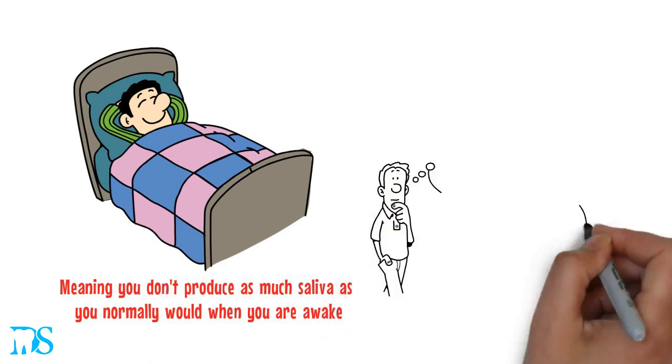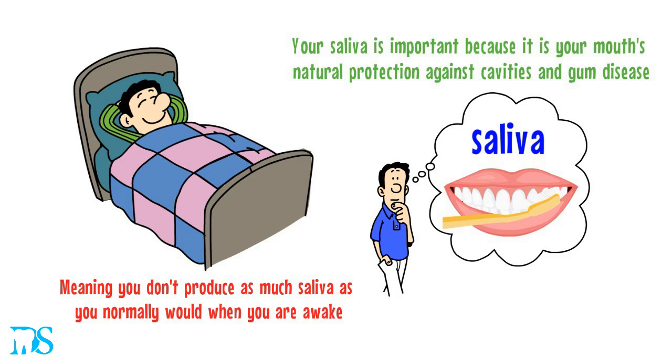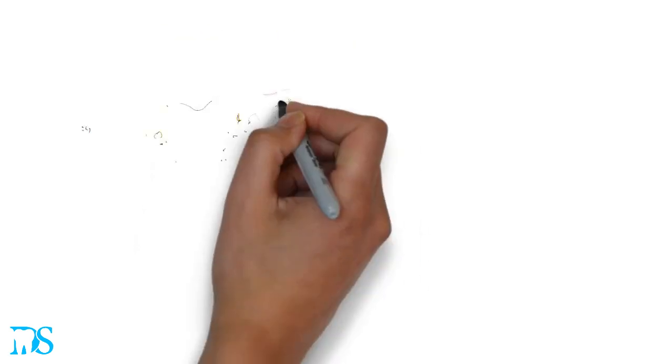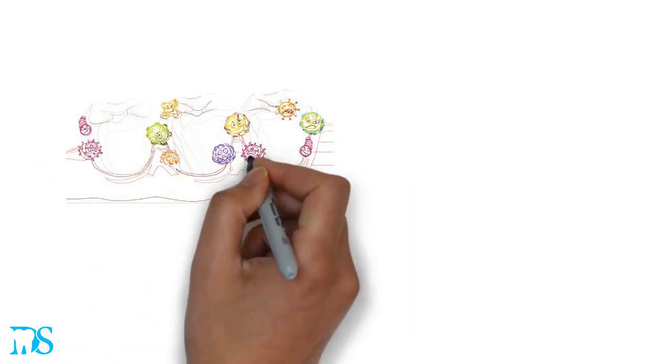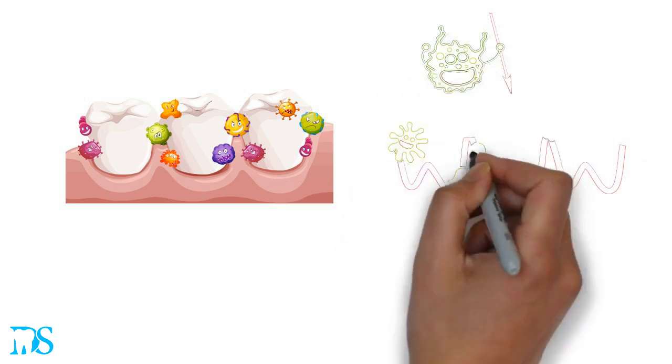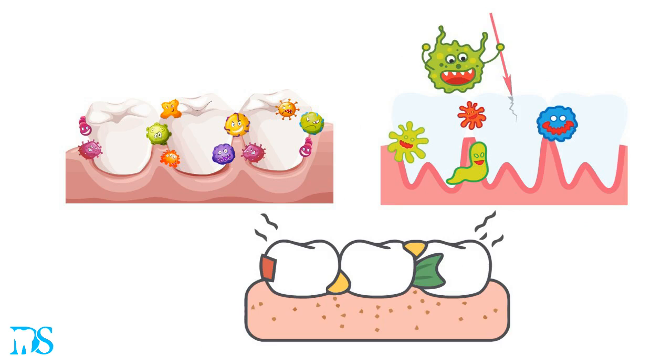Now you might be wondering what your saliva has to do with brushing your teeth. Well, your saliva is important because it's your mouth's natural protection against cavities and gum disease. Saliva helps us in a lot of ways. It can help get rid of some of the plaque building up on your teeth, it can neutralize those acids released by the bacteria in your mouth, and it can wash away any leftovers from your dinner.